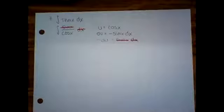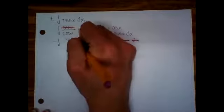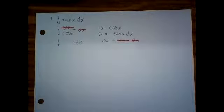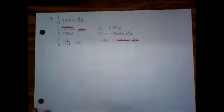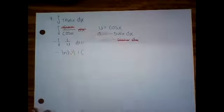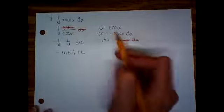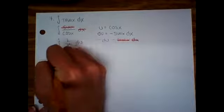So in place of sine of x dx, we're going to put negative du. So I would put the negative out front or negative one, if you will. Du at the end, what's still there? One over u. And so that antiderivative is ln of u plus c. And then replace u with cosine of x. So it is negative ln cosine of x plus c.